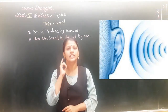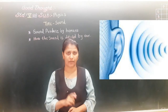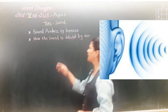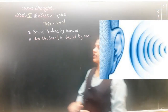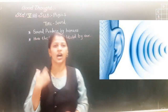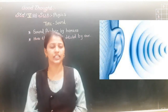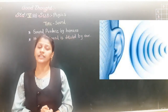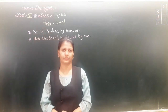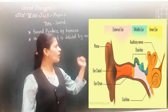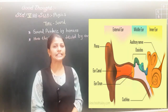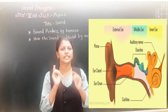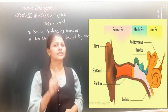You hear with your ear. So how does the ear detect sound? How can we hear sound? We are going to learn that now. This is the picture of the ear. Your ear is divided into three parts: outer, middle, and inner.